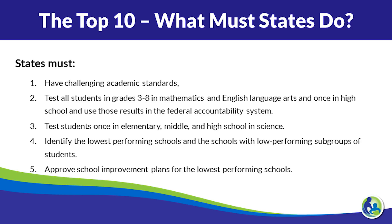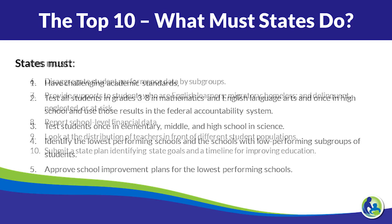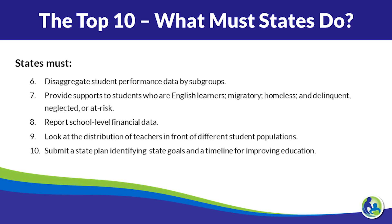Four: we have to identify the lowest performing schools and schools with low performing subgroups of students. Five: approve school improvement plans for the lowest performing schools. Six: disaggregate student performance data by subgroups.